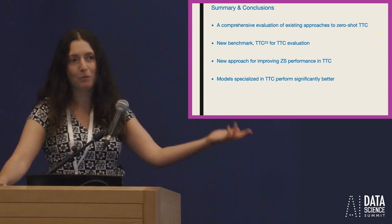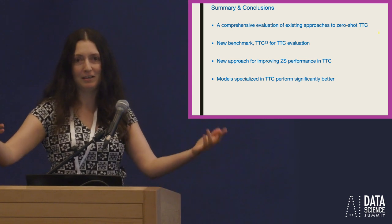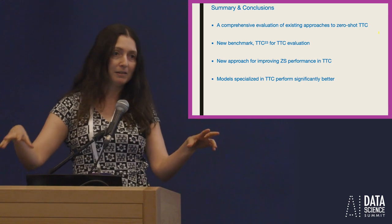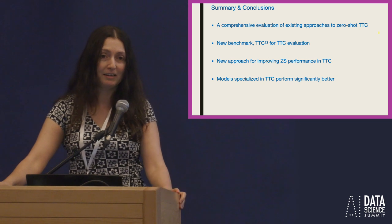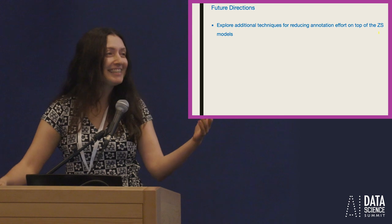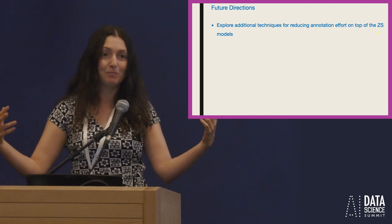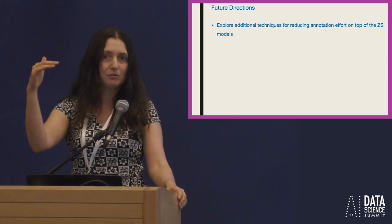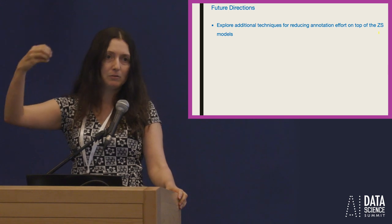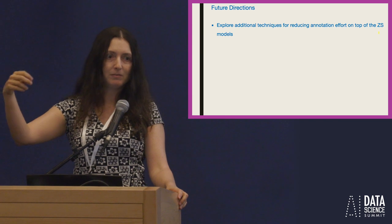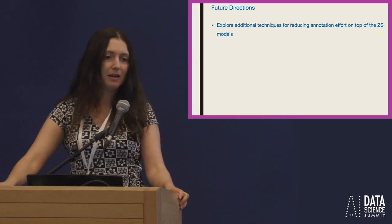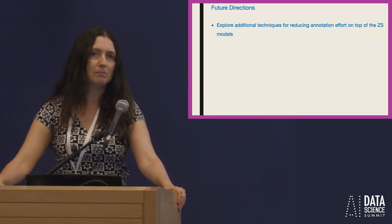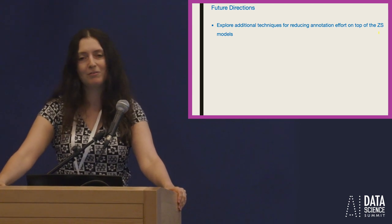To summarize: we performed a comprehensive evaluation of existing zero-shot models, presented a new benchmark we hope the community will utilize, and suggested a new approach for improving zero-shot performance by focusing models on topical text classification. Regarding future directions, zero-shot performance is often not good enough for practical usage, so it will be interesting to further employ methods like active learning and self-tuning on top of these strong zero-shot models to further reduce annotation effort.